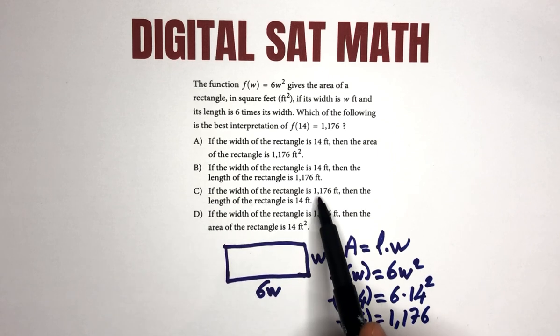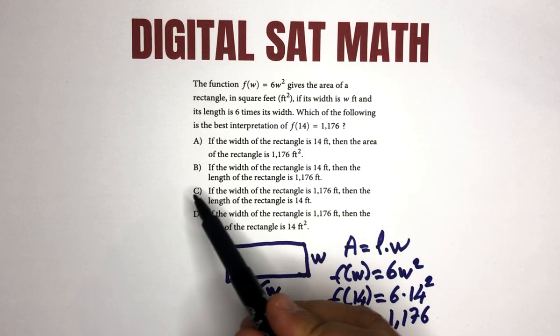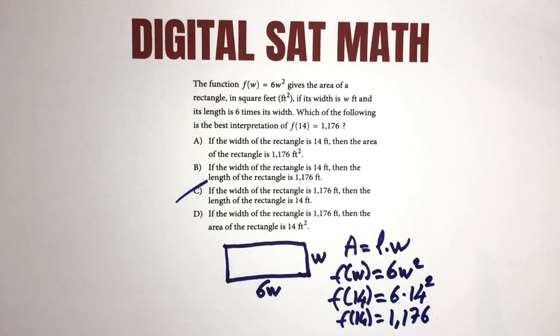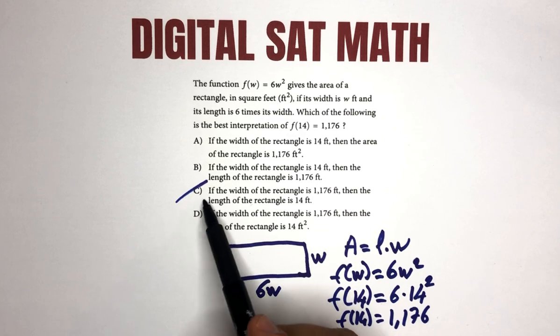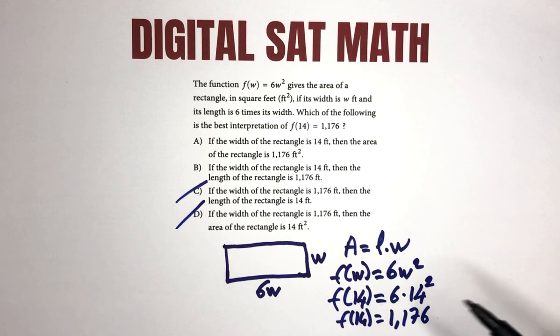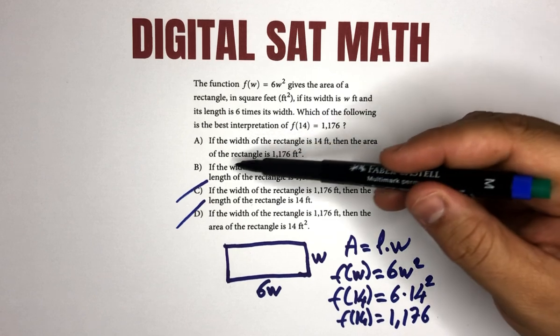So in the choices, we can just go ahead and for instance look at choice C. If the width of the rectangle is 1,176, the width cannot be that much. First of all, you can just go ahead and eliminate this choice. If the width of the rectangle is 1,176 in choice D, you can go ahead and eliminate this choice as well.